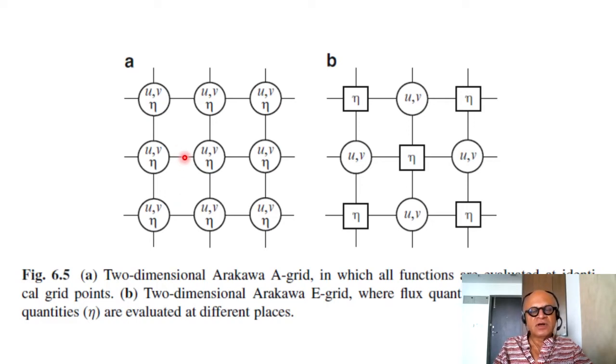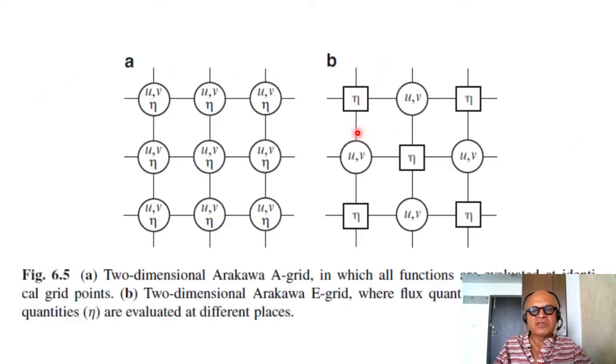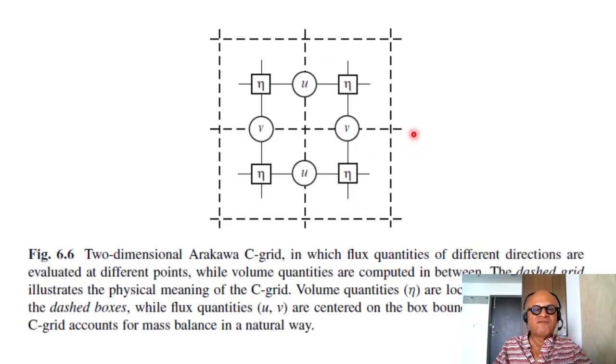So this leads to unphysical things as well as more computation for similar accuracy whereas in the two-dimensional Arakawa E-grid now you are taking eta at the intersection and u, v at a different point. So you have staggered them now with eta at 2 delta x and u and v at 2 delta x and 2 delta y as well. So this is similar to the one-dimensional staggered grid that we talked about except that now it is done in two dimensions and this gives you also better representation of the fluxes versus volume quantities.